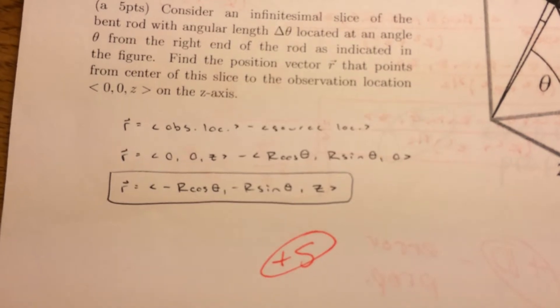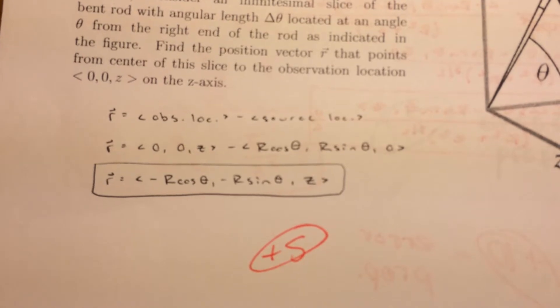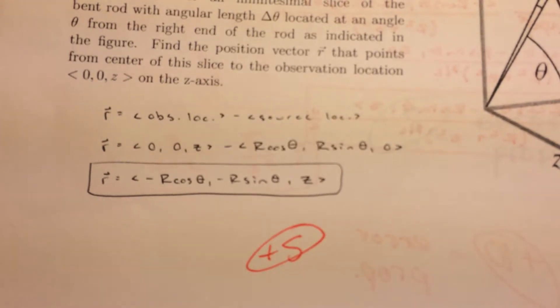For the second line, we're going to look at zero, zero, z, minus r cosine theta,